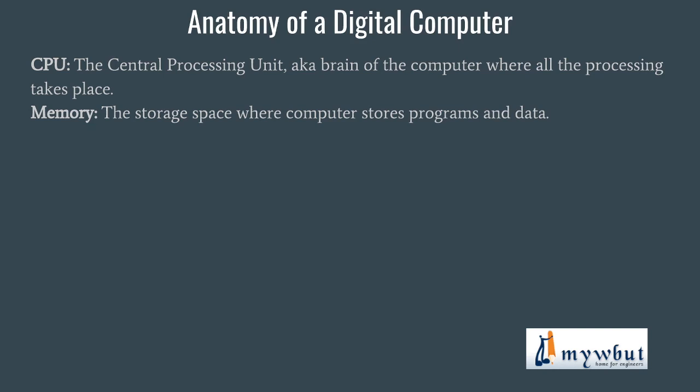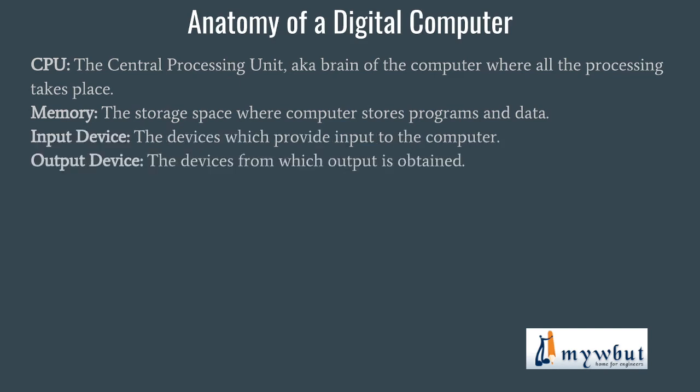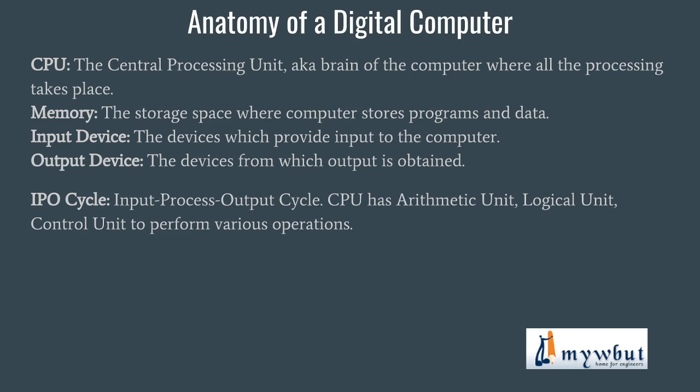Next we have input and output devices. Input devices are those through which we provide input to the computer — for example, keyboard, joystick, mouse, etc. Output devices are those from which we obtain output from the computer — for example, the visual display unit or monitor, speakers, printer, etc.